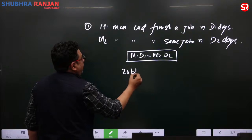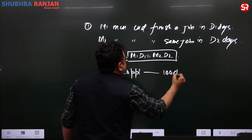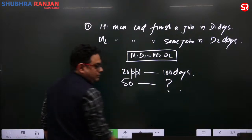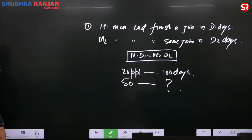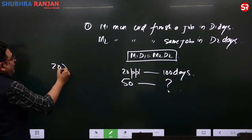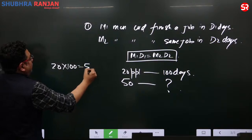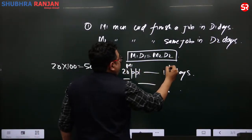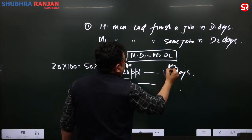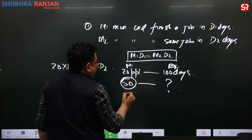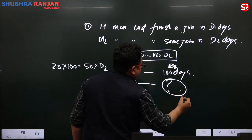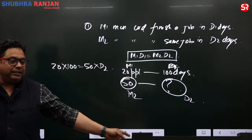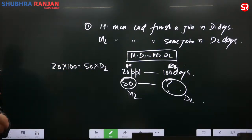For example: 20 people in 100 days, 50 people in how many days? You say 20 into 100 is equal to 50 into D2. Mark M1 as 20, D1 as 100, M2 as 50, and D2 as the unknown. The question can be easily sorted out without any problem.